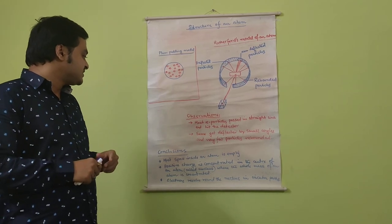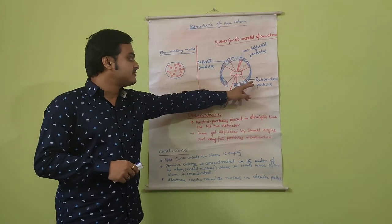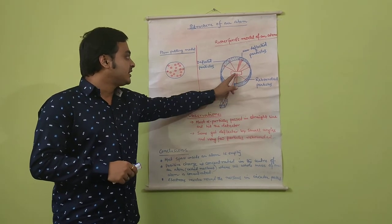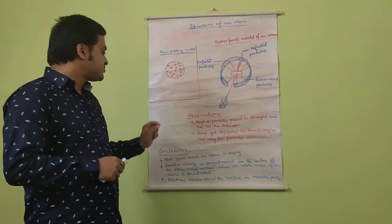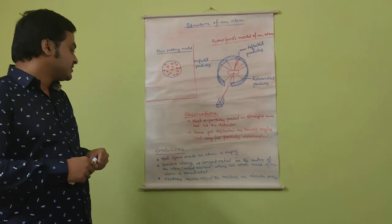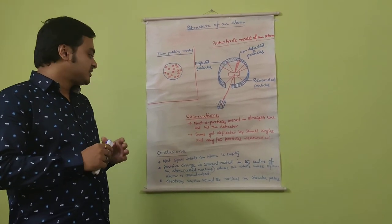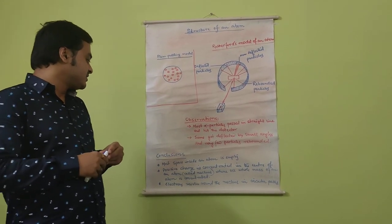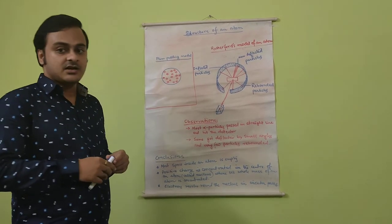Secondly, the positive charge is concentrated in the center of an atom. This is why a few of the alpha particles rebounded and some deflected. There must be a positive structure concentrated in the center of the atom, which is regarded as the nucleus, where the entire mass of the atom is said to have been concentrated. Electrons revolve around the nucleus in circular paths.